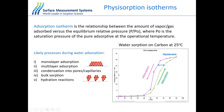The physisorption process can be expressed by physisorption isotherms. On the x-axis we have relative pressure (P/P₀), while on the y-axis we have the change in mass or amount adsorbed. We have adsorption and desorption curves. The relationship shown is between the amount of water vapor absorbed versus the equilibrium partial pressure of water, where P is the measured pressure and P₀ is the saturation pressure at the operational temperature. We're looking at a Type IV isotherm, typical of a large hysteresis curve. During adsorption, several processes occur: monolayer adsorption, multilayer adsorption, condensation in pores, and hydration reactions.